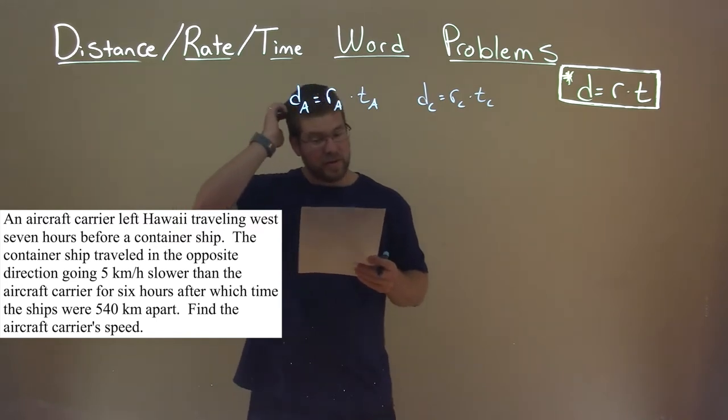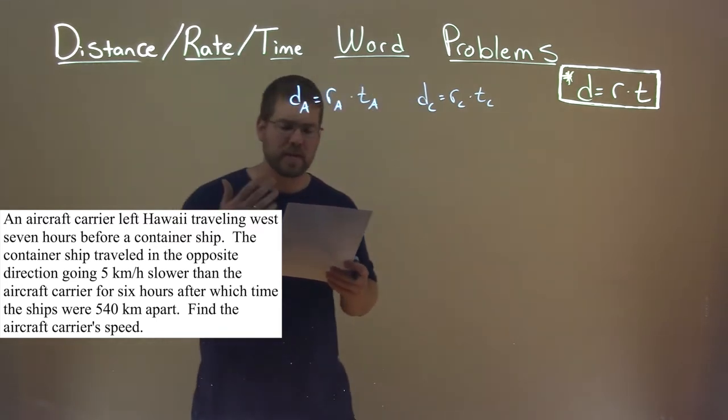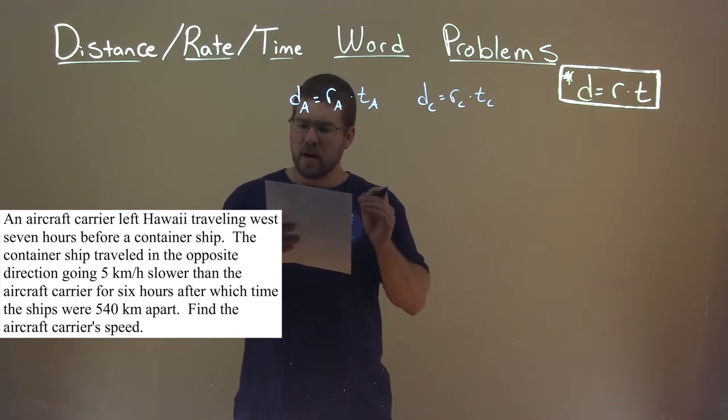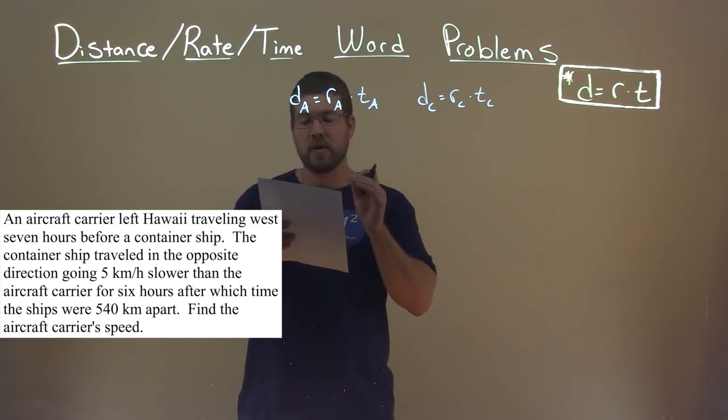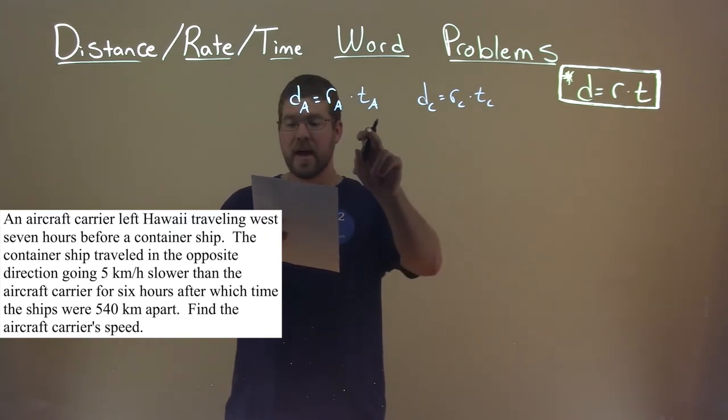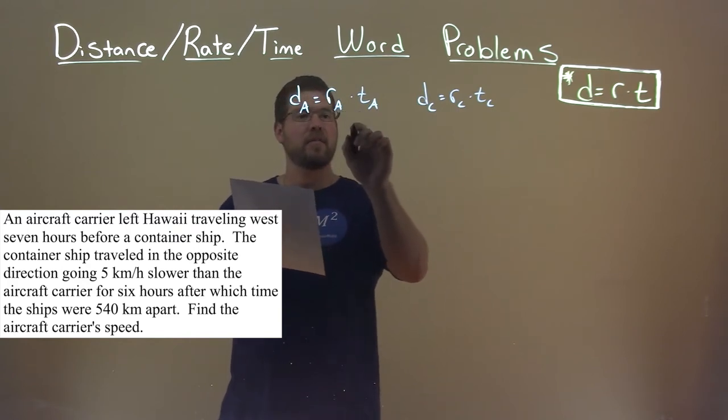So let's plug in what we know here. What about time? Well, they tell us here an aircraft carrier left Hawaii traveling west seven hours before the container ship, and then after seven hours, so that seven hours is here.